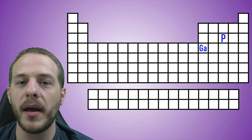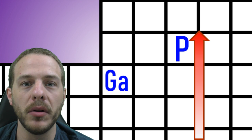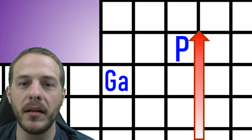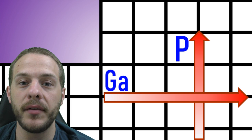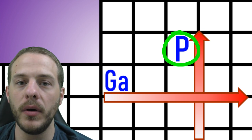Now that we know that electronegativity decreases going down a group and increases as you move from left to right across a period, we can look at two elements in the periodic table and predict which one will be more electronegative simply based on their positions. It won't work all the time and there are plenty of exceptions, but it's still a useful general trend. For example, which of the two elements — gallium or phosphorus — is more electronegative? We can infer that phosphorus is more electronegative than everything directly below it because electronegativity decreases going down a group. And gallium is less electronegative than everything directly to the right of it because electronegativity increases traveling from left to right across a period. So phosphorus, being the highest and rightmost element of the two, is more electronegative than gallium.